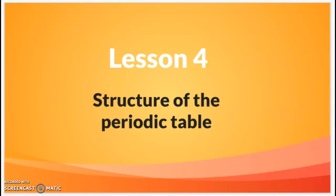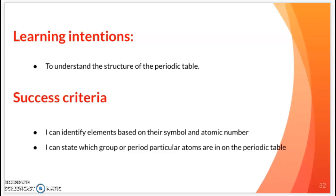Next up, we have the structure of the periodic table. Now we're focusing solely on the periodic table. We're taking more of an overall understanding of the history and everything behind it. By the end of this, I want you to understand the structure and what you can take from it. I want you to be able to identify the elements on what symbol they have and the atomic number. And I also want you to be able to state, if I give you a group and a period, can you find that atom for me?